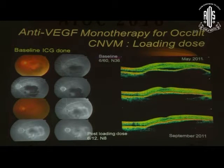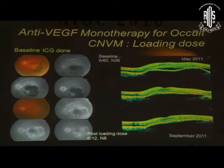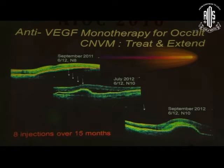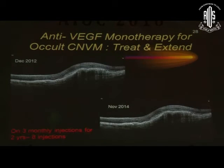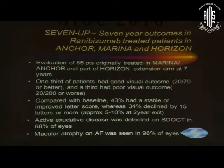Here is an anti-VEGF monotherapy case for occult CNVM: post loading dose, there is a good response - the OCT hemorrhage has cleared and the OCT is dry. The patient was then placed on a gradual treat-and-extend regime, receiving 8 injections over 15 months, remaining stable. As seen here almost two years later, we are continuing to give 3-month interval injections to this patient.